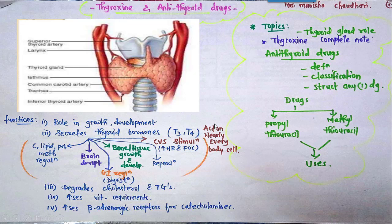The synthesis of thyroid hormones as such is not directly asked in exams, but it is important from the mechanism of antithyroid drugs point of view. We will understand the thyroid gland role, then go through Thyroxine — a complete note on T4 is very important from the exam point of view. Then antithyroid drugs: definition, classification, and important drugs like Propylthiouracil and Methylthiouracil.